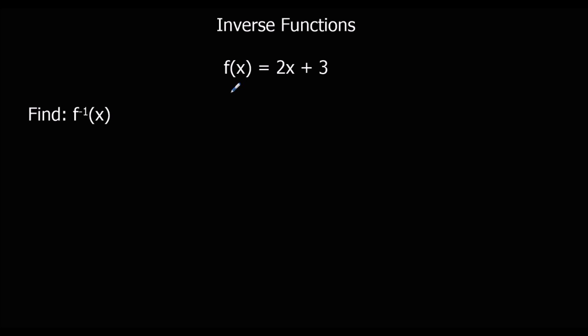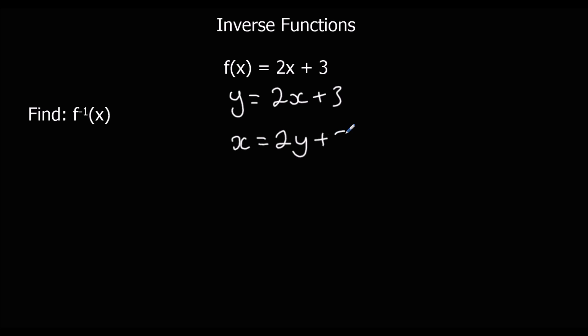If we imagine this is written y equals 2x plus 3, an inverse function is just where the x's and the y's are switched — the x's become the y's and the y's become the x's. So if I just switch them here, I'll have x equals 2y plus 3.